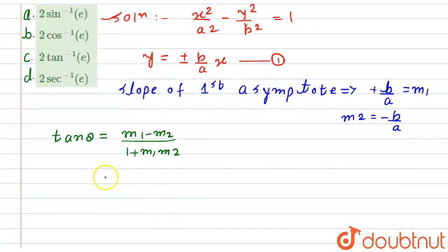Now substitute the values here. This implies m1 is b divided by a, m2 is minus b by a, so minus of minus b by a, minus minus becomes plus b by a divided by 1 plus minus will become minus, m1 is b by a and m2 is minus b by a, that's why plus minus will become minus into b divided by a. So it will be equals to 2b divided by a, this is divided by 1 minus b squared by a squared.